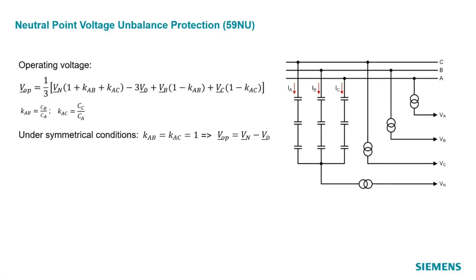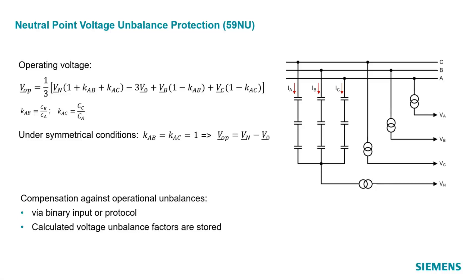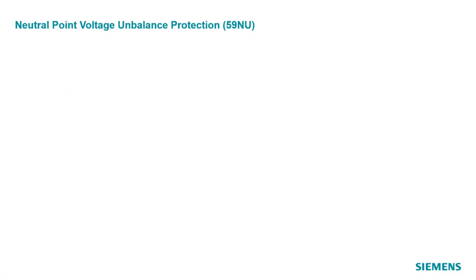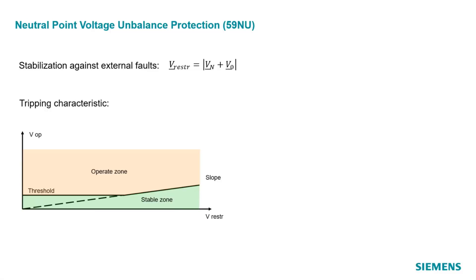However, also with this method we experience an influence of operational unbalances of the capacitors, so that VOP can be different from zero and hence compromise the calculation result. Thus the function has a built-in compensation feature which calculates the voltage unbalance factors based on the momentary measured voltages and stores them in a non-volatile memory. These values replace the values of 1 used before compensation. For external faults, where the voltage of one phase can break down and the neutral voltage reaches a high value, the operating voltage can be different from zero because of measurement errors for the voltage transformers. That is why tripping by VOP is stabilized with a second quantity called the restrained voltage V-restrained, calculated as the absolute value of Vn plus V0. Similar to current differential protection, a tripping characteristic is defined between the operating voltage VOP and the restrained voltage V-restrained, with a threshold and a slope as parameters.